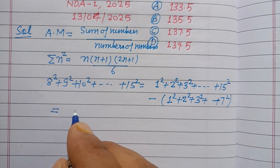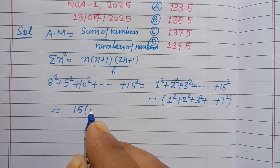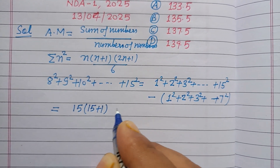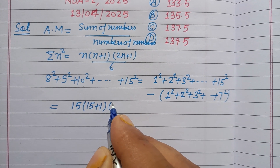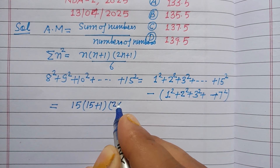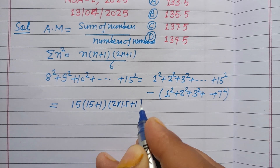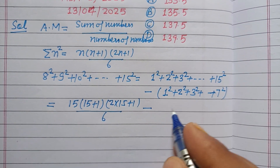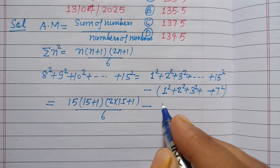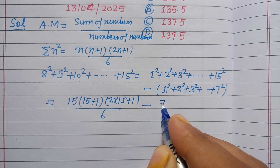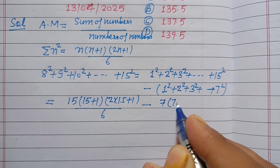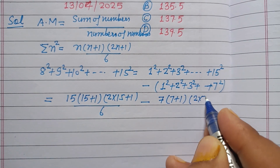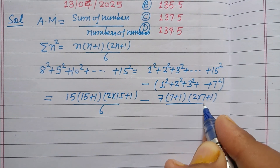For the first part, these are 15 numbers so we put n = 15: 15 × 16 × 31 divided by 6. For the second part, these are 7 numbers so we put n = 7: 7 × 8 × 15 divided by 6.